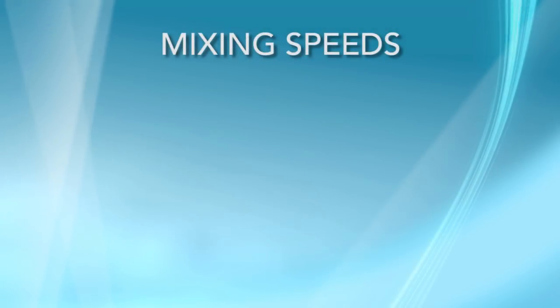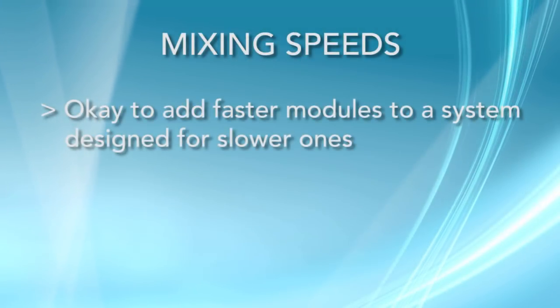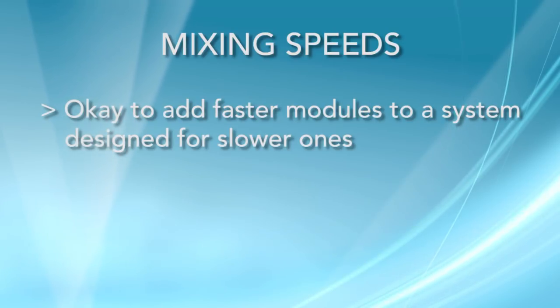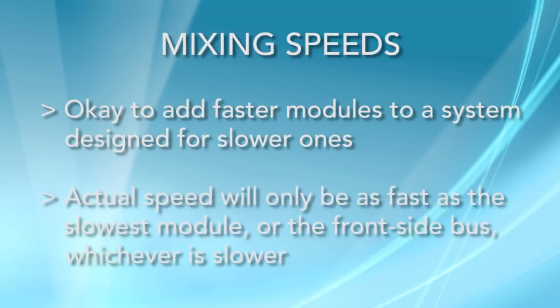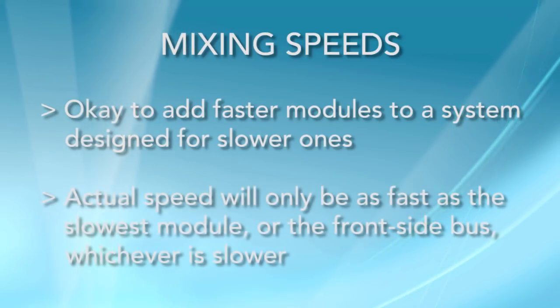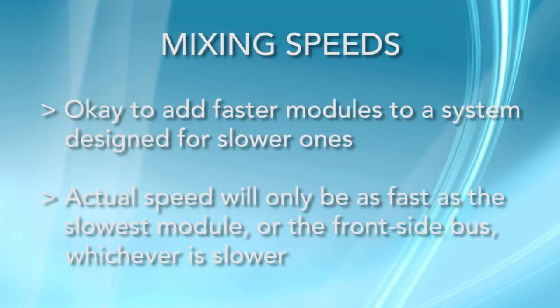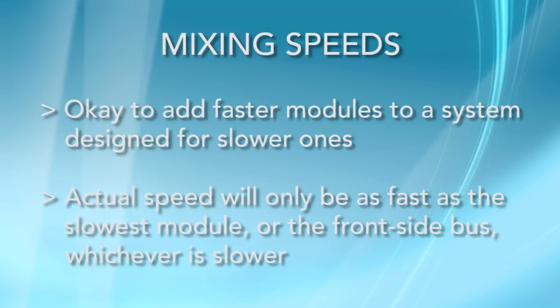As technology advances and modules get faster, slower speeds are discontinued. However, newer modules are backward compatible with their slower cousins. That means it is usually safe to add faster modules to a computer that was designed to run slower memory. But keep in mind that your memory will only operate as fast as the slowest memory module, or at the maximum speed of the system's frontside bus, whichever is lower.